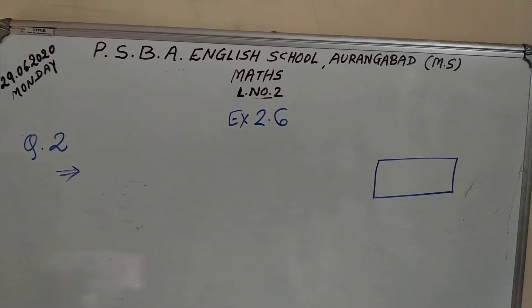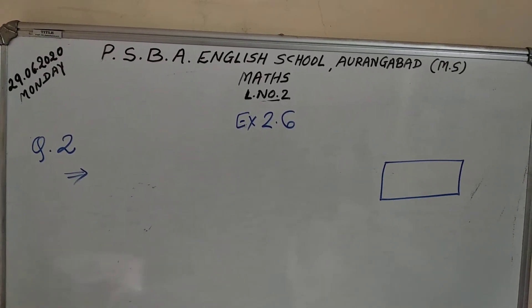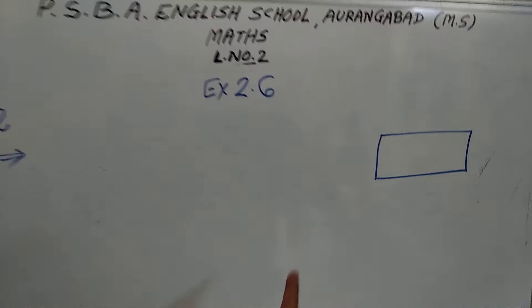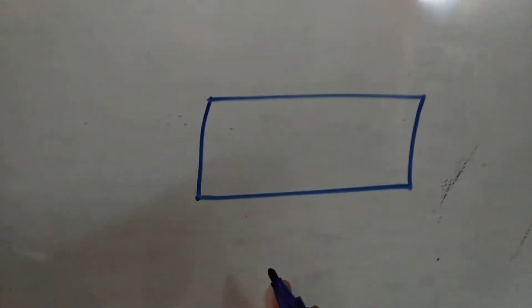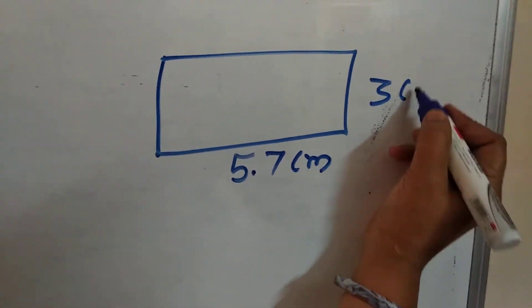Find area of a rectangle whose length is 5.7 cm and breadth is 3 cm. Here, I drawn one rectangle. I will write here length. Length, it is 5.7 cm and breadth is 3 cm.